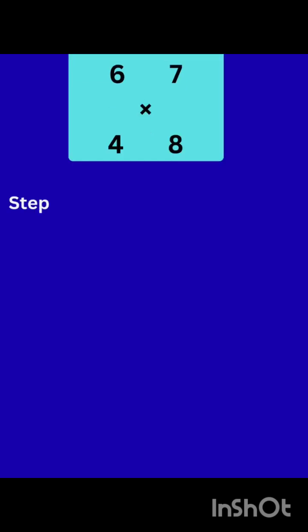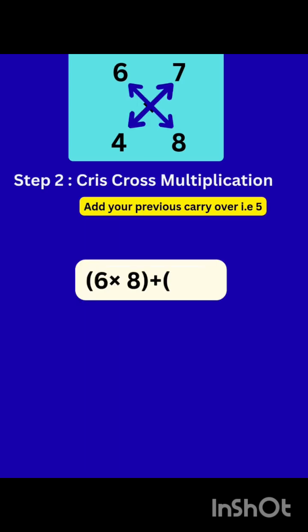So step 2 is criss-cross multiplication. That means we have to multiply 10's digit of top number with 1's digit of bottom number, and in other cross, 1's digit of top number with 10's digit of bottom number, and add them together.